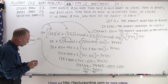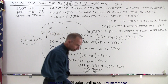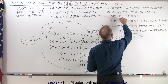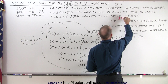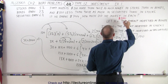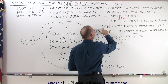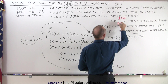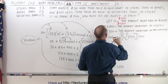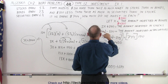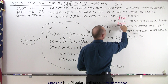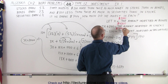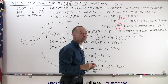So x equals 2,000. Now we go back and see how much was invested in each. x is the amount invested in bonds, so we invested $2,000 in bonds. Two hundred more than twice as much: twice 2,000 is 4,000 plus 200 gives $4,200 invested in stocks. And five hundred less than twice as much as that: twice 4,200 is 8,400 minus 500 gives $7,900 invested in securities.